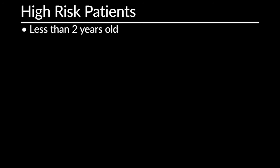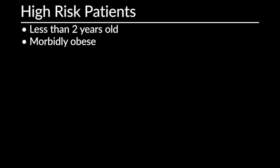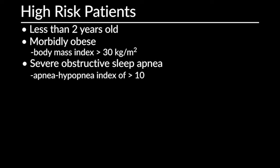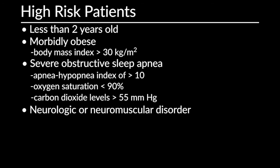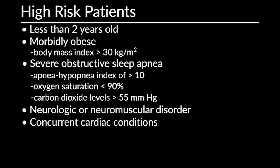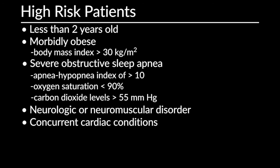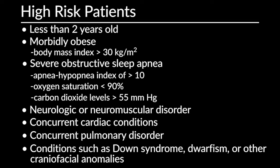Patients at higher risk are admitted with continuous cardiorespiratory monitoring and placed in the intensive care unit if necessary, decided on a case-by-case basis. These could be patients less than two years old, morbidly obese with a BMI greater than 30 kg/m², severe obstructive sleep apnea with an apnea hypopnea index greater than 10, oxygen saturation less than 90%, or carbon dioxide levels greater than 55 mmHg. Also included are patients with a neurologic or neuromuscular disorder predisposing them to upper airway obstruction, concurrent cardiac conditions requiring ECG monitoring, concurrent pulmonary disorders predisposing to respiratory compromise, or conditions such as Down syndrome, dwarfism, or other craniofacial or airway anomalies.